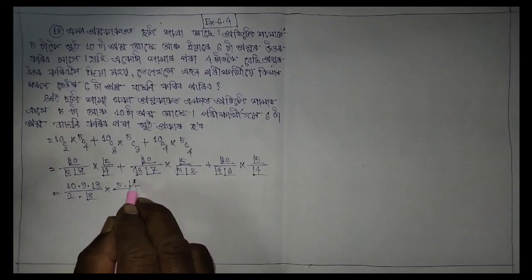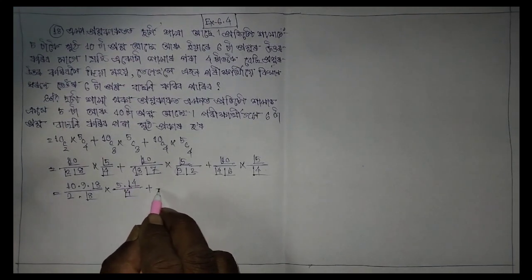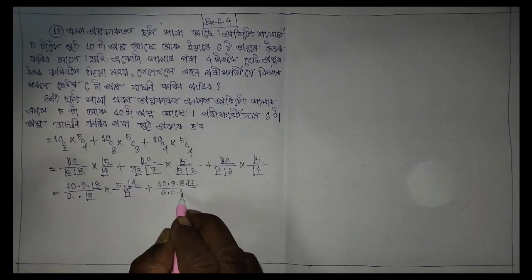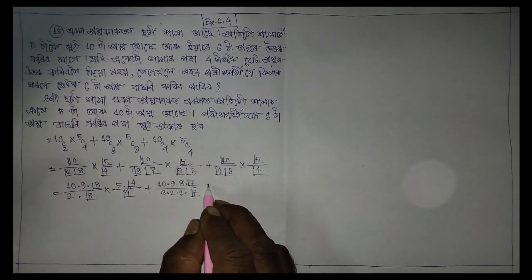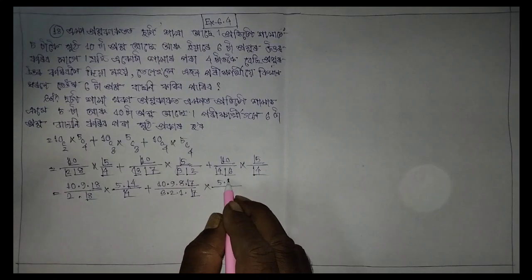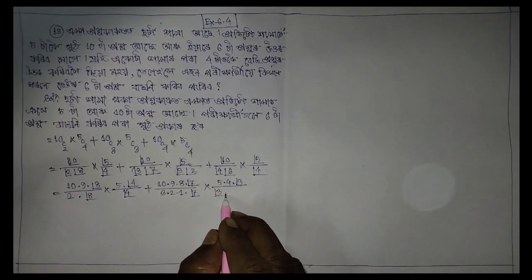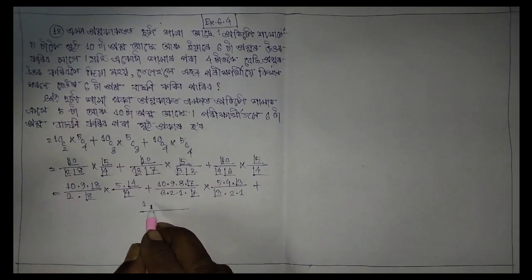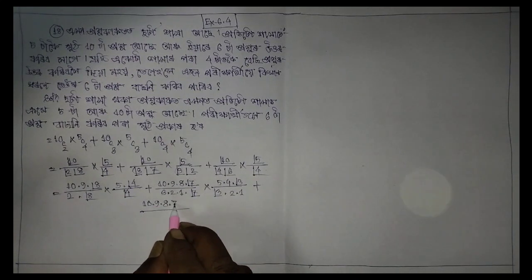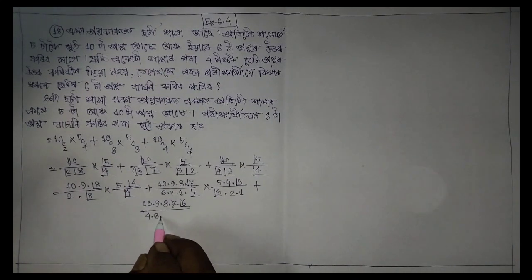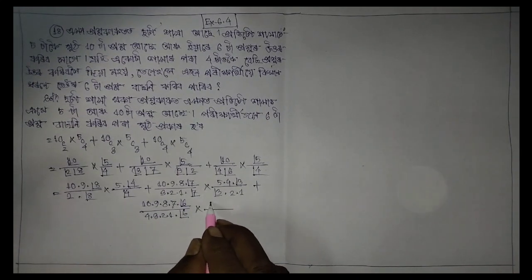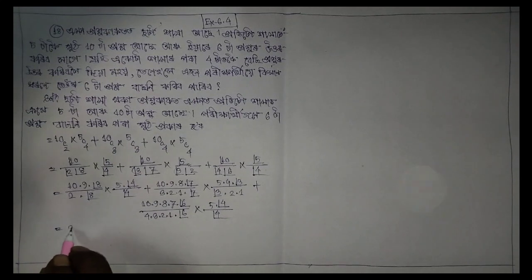5 into factorial(4) by 4 plus 10 into 9 into 8 into factorial(7) by 12 into 1 into factorial(7) into 5 into 4 into factorial(3) by 2 into 1 plus 10 into 9 into 8 into 7 into 6 by 4 into 3, 2, 1 multiplied by W(6) times 5 times 4 by R4, times 25, 2